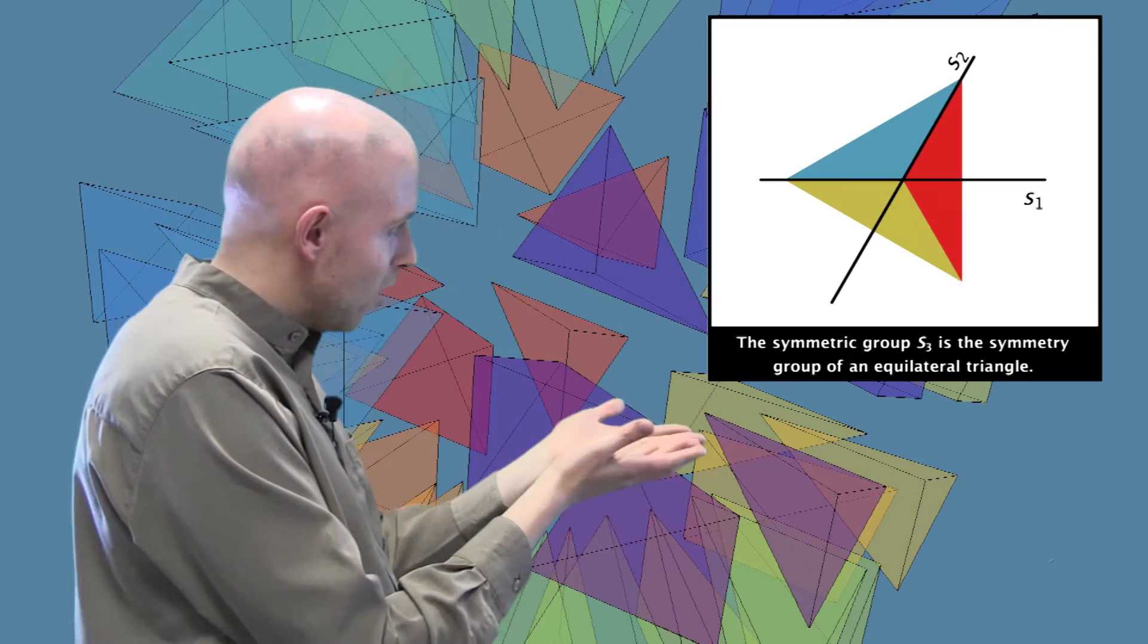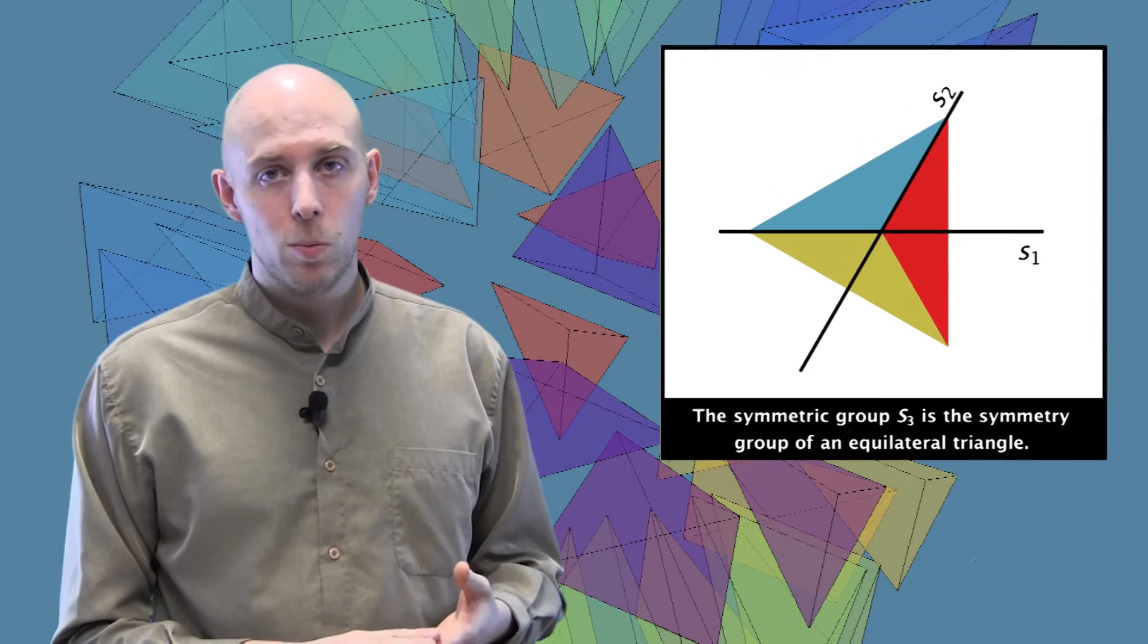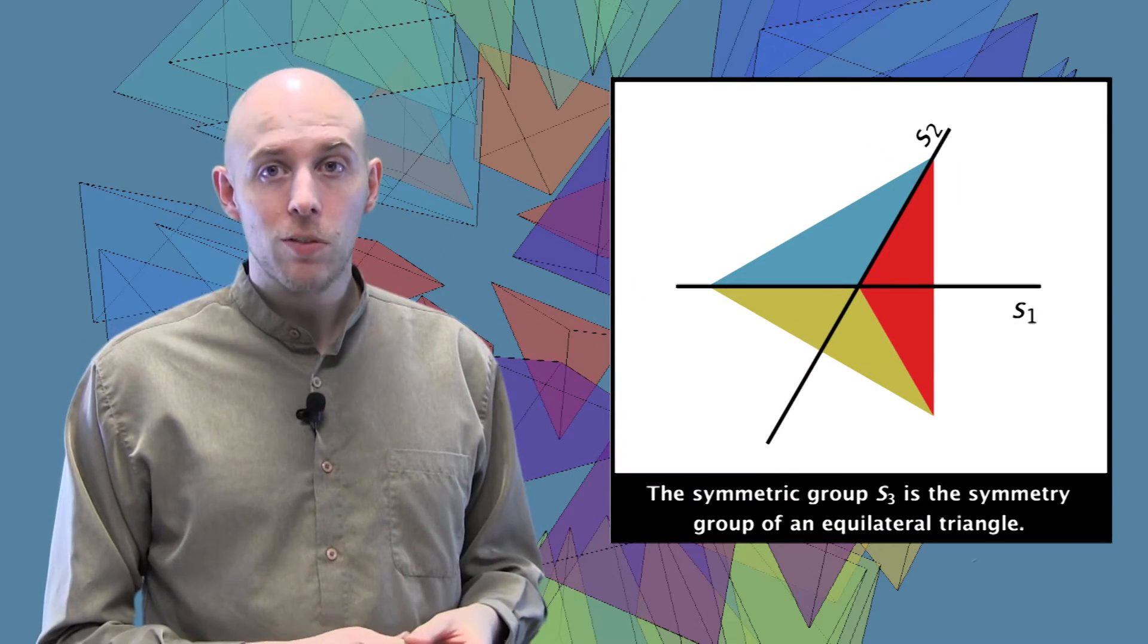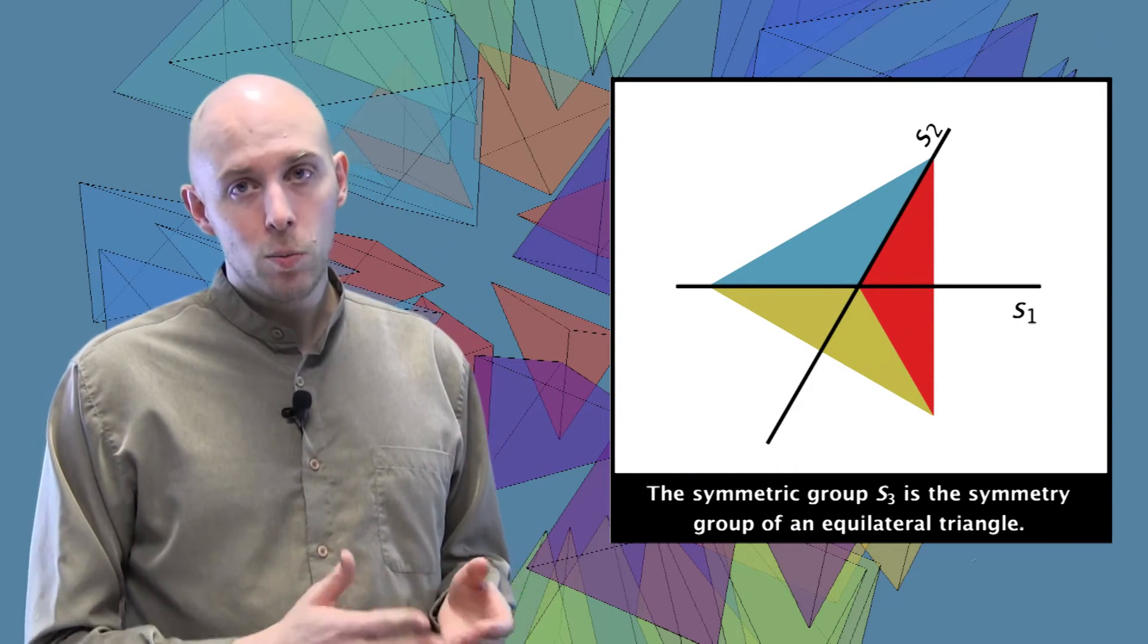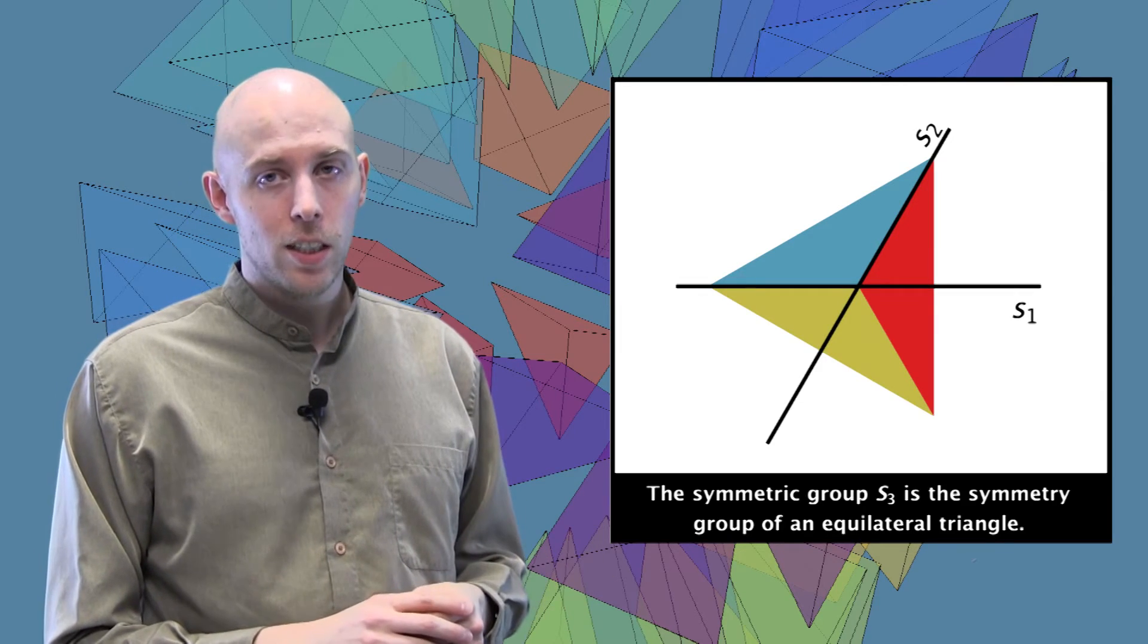Another famous group is the symmetric group, which we can understand as the group of reflection symmetries of a regular simplex. So for example, a tetrahedron. Think that in higher dimensions. In fact, we've already seen the two-dimensional version, the triangle. The symmetric group S3 is the symmetry group of a triangle where we have two mirrors placed at an angle of 60 degrees to each other.